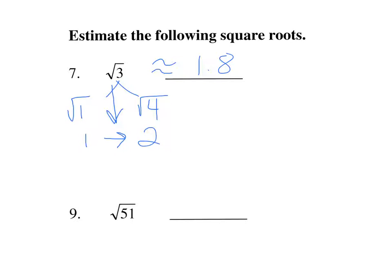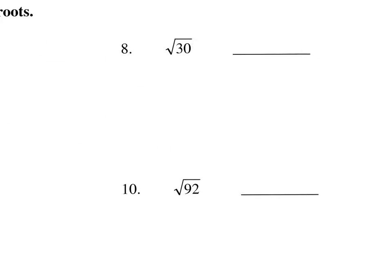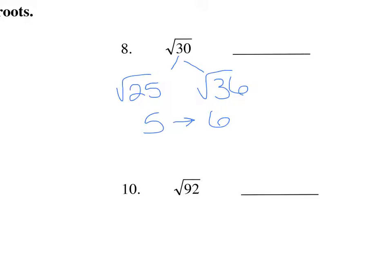You get closer with a calculator, but we're not using the calculator. The square root of 30 is between the square root of 25 and the square root of 36, which would be between 5 and 6. It's almost exactly in the middle, so we're going to say this is approximately 5.5.